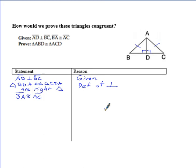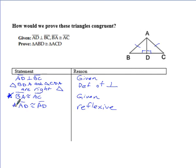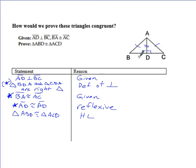Now that we've established they're right triangles, that leads us toward hypotenuse leg. Our next given is BA is congruent to AC — that was given to us. And since we have two triangles pressed against each other, AD is congruent to AD by reflexive property. The tricky thing with hypotenuse leg is you really only need two of those congruence statements. By establishing they're right triangles, we're essentially covering the third. So we prove triangle ABD is congruent to triangle ACD by hypotenuse leg.